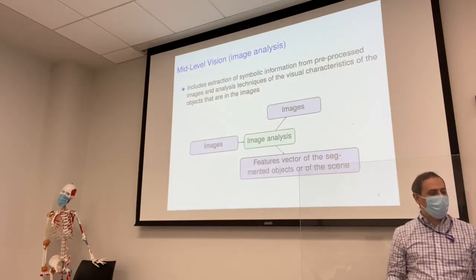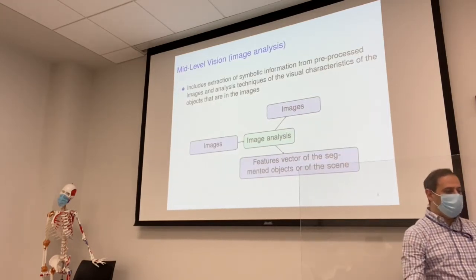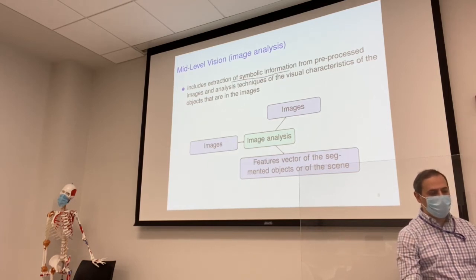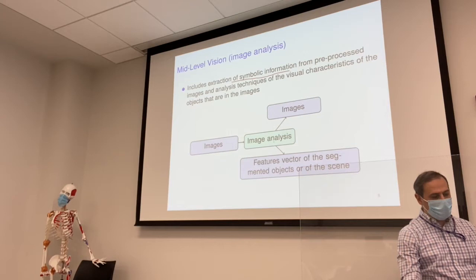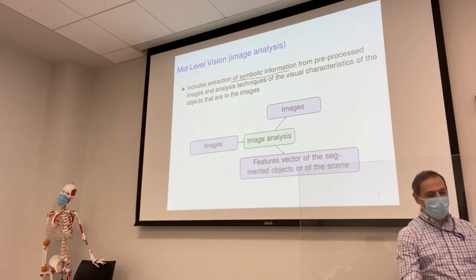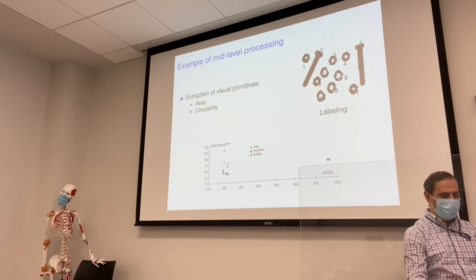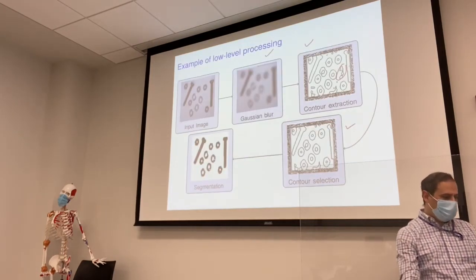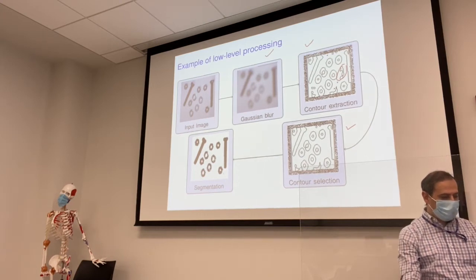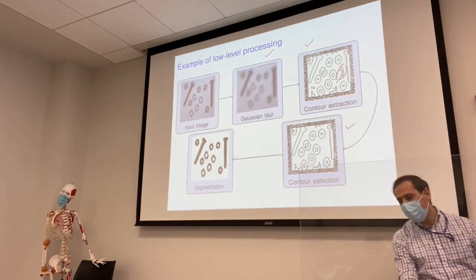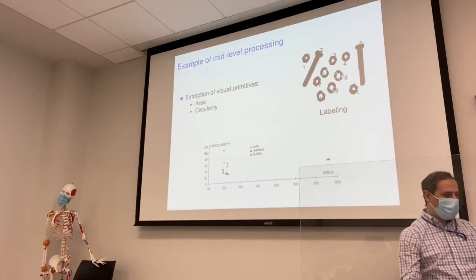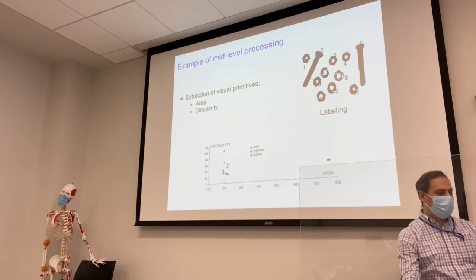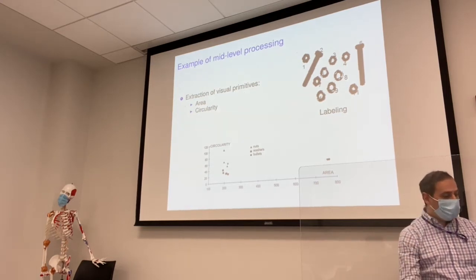Now, what happens when you work with mid-level imaging? It includes extraction of symbolic information from processed images and some characteristics. You have an image, you do image processing and analysis, and then you get some features out of the image that you'll be looking for. For example, using the same example, you do segmentation — filling the contours — and then take the image and automatically extract visual primitives, finding the area and similar properties.